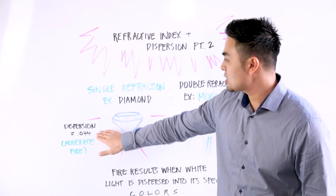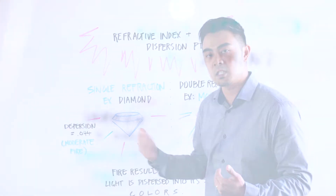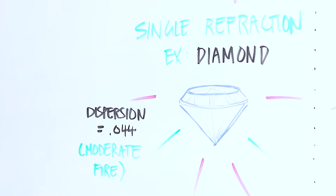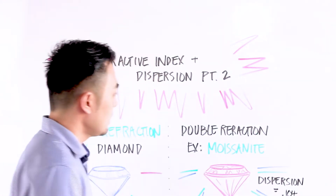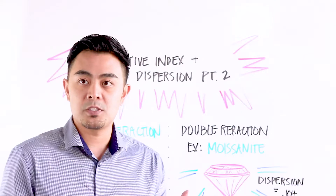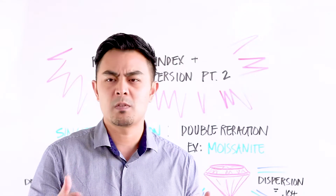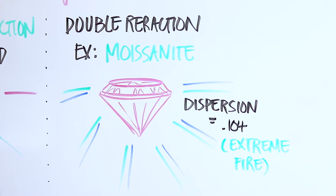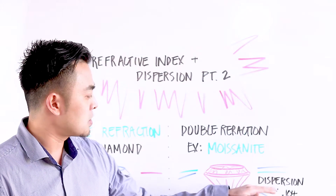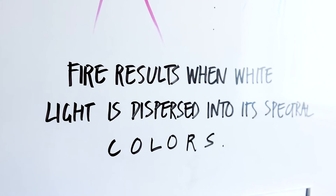For diamonds, the measurement of dispersion is 0.044. According to the GIA booklet — I went to the Gemological Institute of America — I got this information from the back of the booklet. The dispersion measurement is 0.044, and it's graded as moderate fire. When it comes to moissanite, moissanite is known to have a lot of fire. That's why many people like moissanite, and some people don't because they think it looks too much like a disco ball effect. The dispersion measurement for moissanite is 0.104 — the higher the dispersion measurement, the more fire you will see.